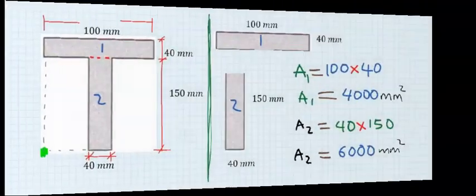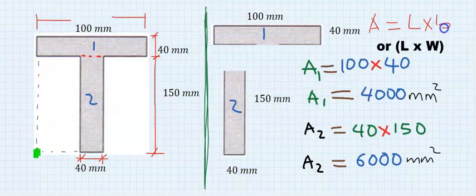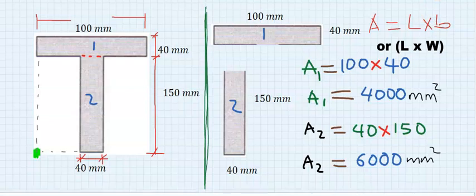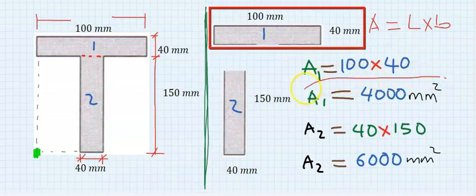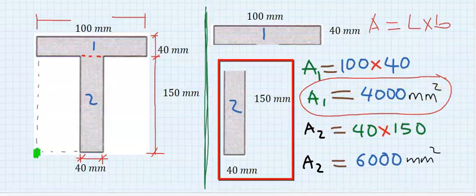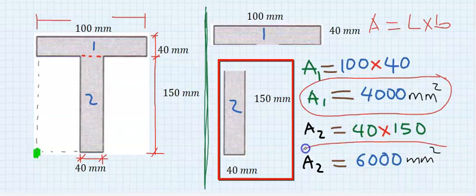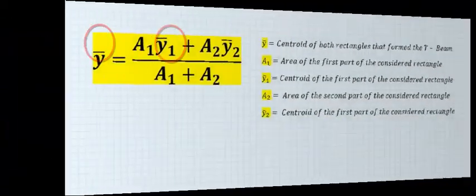Step number three: find the area of the first and second rectangle. The area of a rectangle is calculated as length times breadth. The area of the first part is 4,000 mm² and the area of the second part is 6,000 mm².